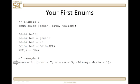As another example, let's create an enumeration called exit with enumerators door, window, chimney, and drain. Here I have initialized the values to values other than the defaults. So door is 7, window is 3. Chimney — since it succeeds window — its value is going to be 4. And then drain is 1.